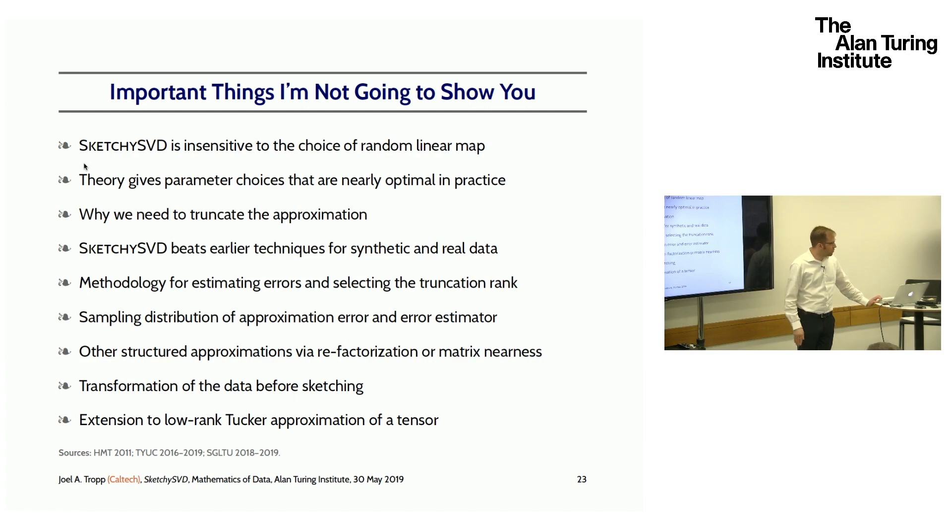There are a lot of things I don't have time to show you, including that you can choose pretty much whatever random maps you want. The theory tells you how to pick parameters. You actually do need to truncate this approximation if you want it to be accurate. It works better than previous results. There's methodology for error estimation a posteriori and picking the rank of the truncation a posteriori. You can look at the sampling distribution and the approximation error and you will see that it concentrates very sharply. You can also do low rank Tucker approximations using the same methodology. There's tensor stuff here too.